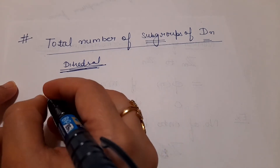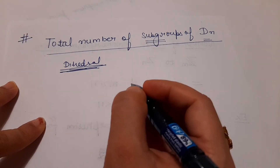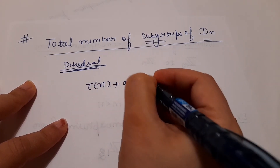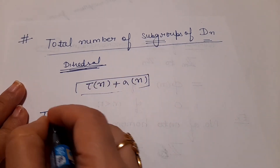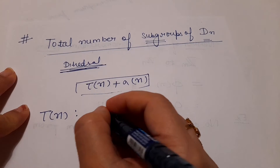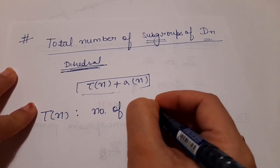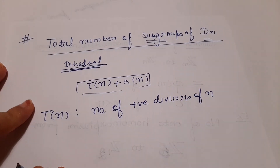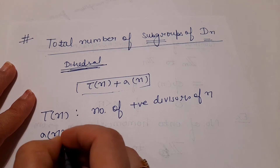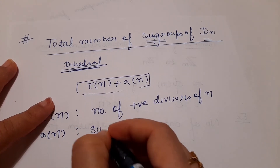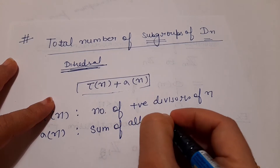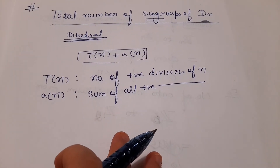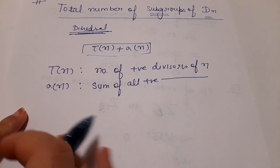For Dn, the short trick is: total number of subgroups of Dn equals τ(n) plus σ(n). τ(n) is the number of positive divisors of n, and σ(n) is the sum of all positive divisors of n. We have studied these in detail.